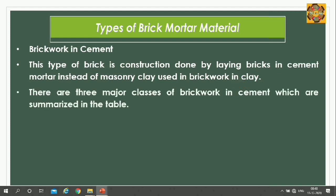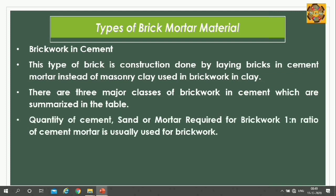There are 3 major grades of brick work in cement, summarized in a table. The quantity of cement and sand mortar required for brick work is in ratio 1:1, 1:2, 1:3, or 1:4, as specified per the project description or tender specifications. For example, 1:3 means 1 part cement and 3 parts sand.